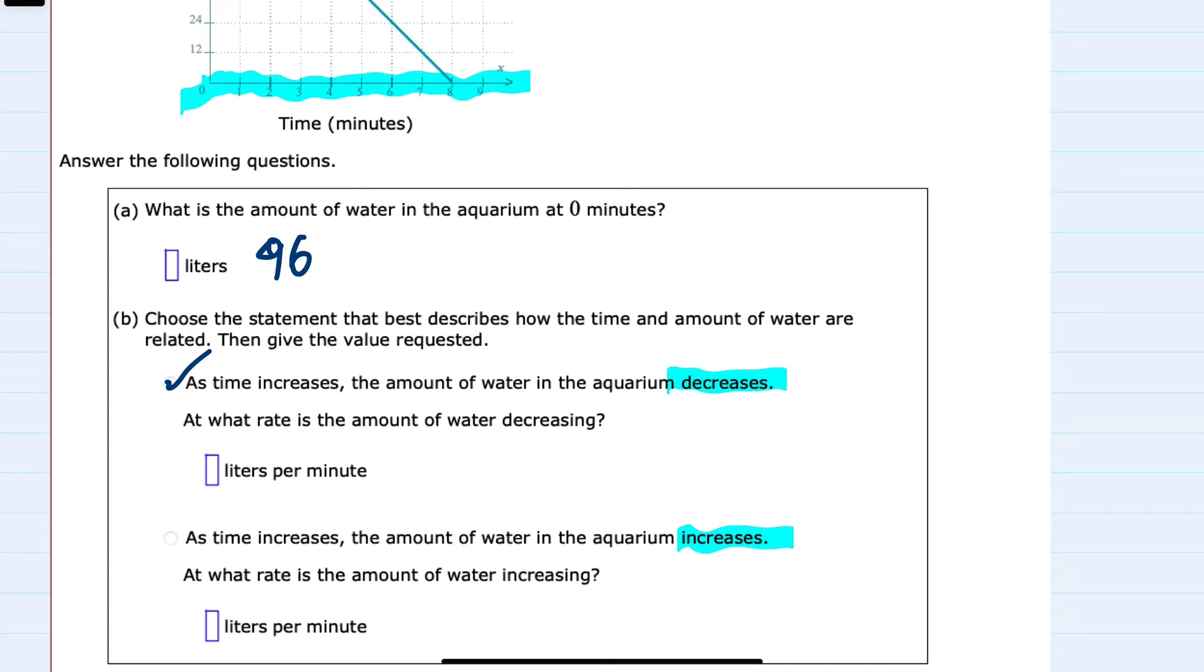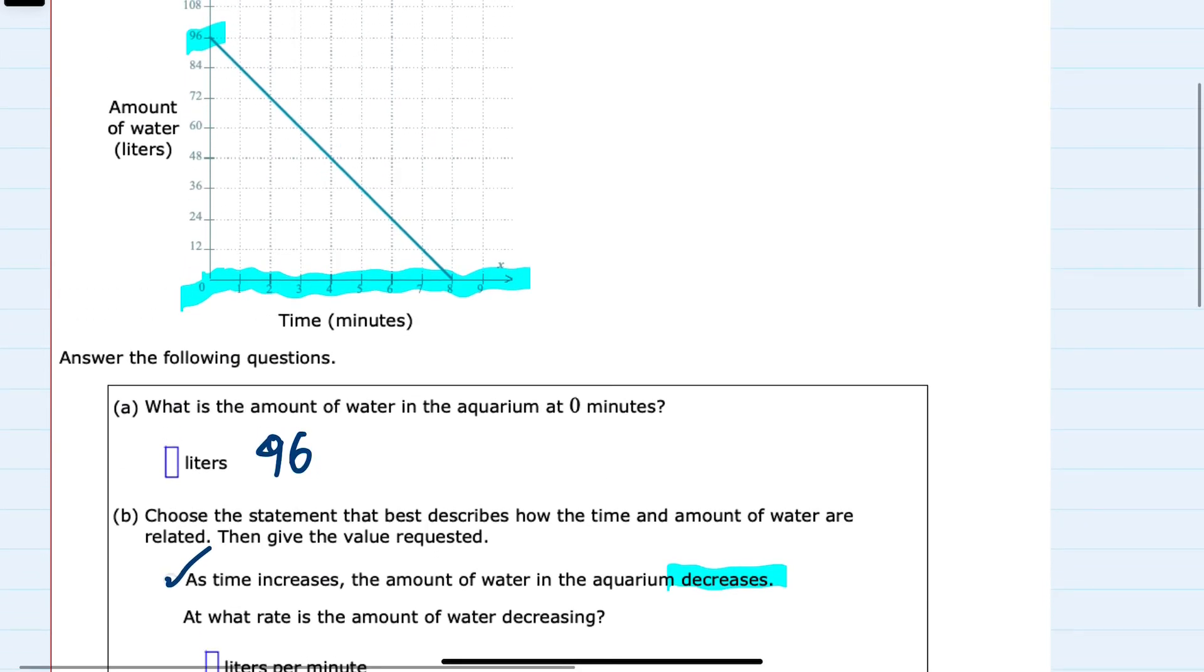But we also need the rate. And from this example, we can find the rate. The rate is the slope of the line. And since we have both of the intercepts, I can see that we are decreasing at a rate of 96 liters in 8 minutes.